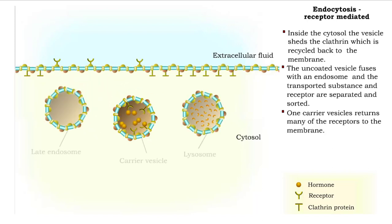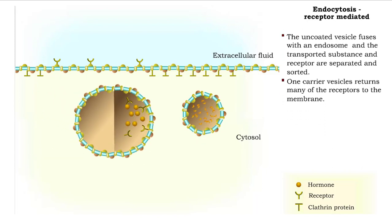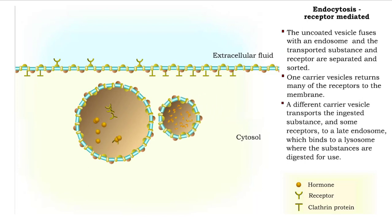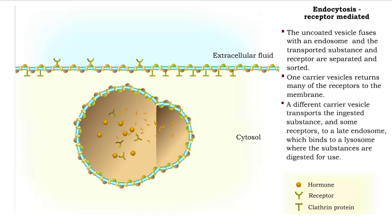The ingested substance and some receptors are transported in carrier vesicles to a late endosome, which binds with a lysosome, where the substances are digested into usable products by the cell.